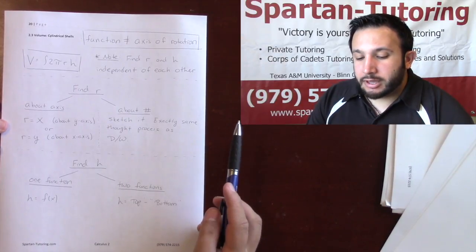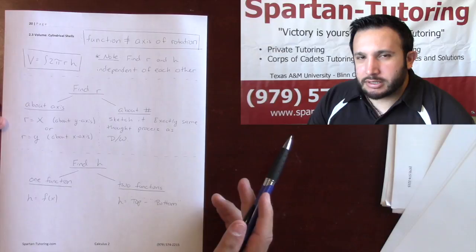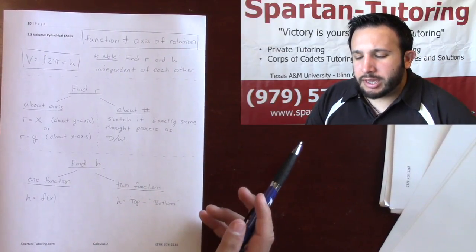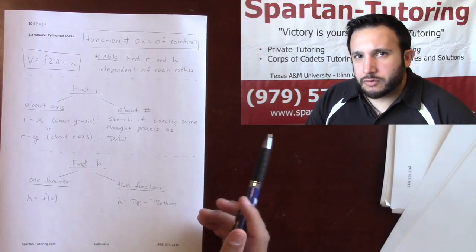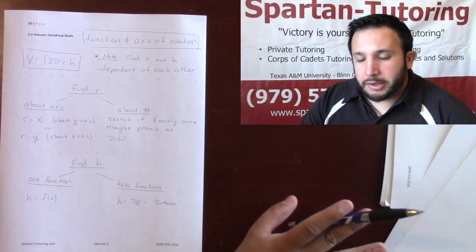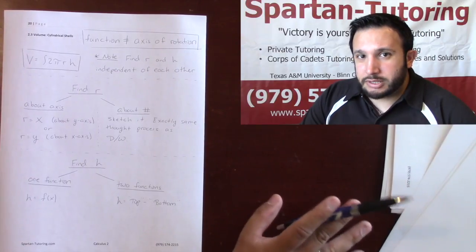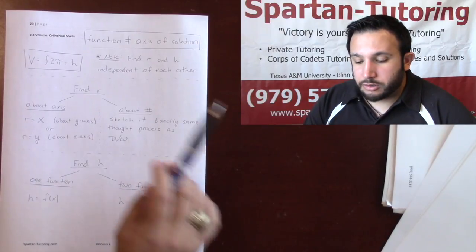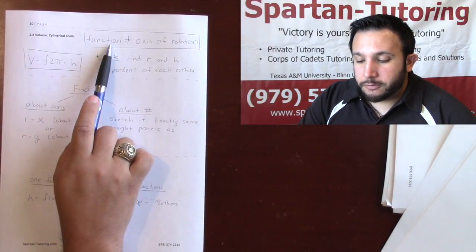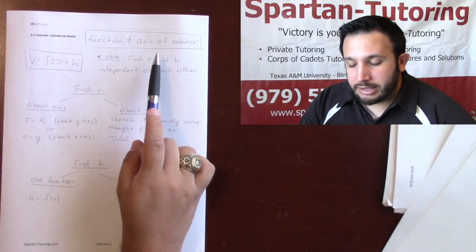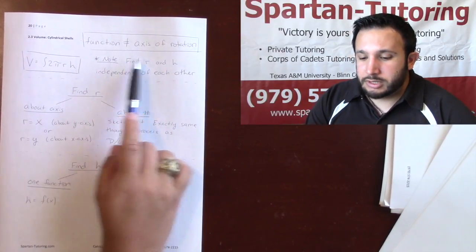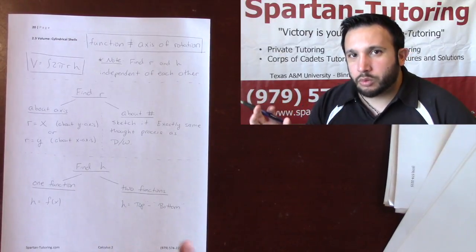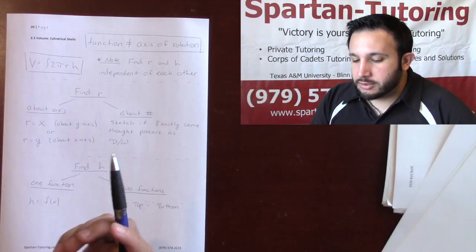The big question I get a lot is: we already talked about discs and washers, so when do I use disc washers versus cylindrical shells? When the function equals the axis of rotation — meaning you have a function of x about an x-axis — that's disc washer. But with cylindrical shells, when your function does not equal the axis of rotation, that's when you use cylindrical shells. So if you're given some function of x rotated about the y-axis, you're using cylindrical shells.